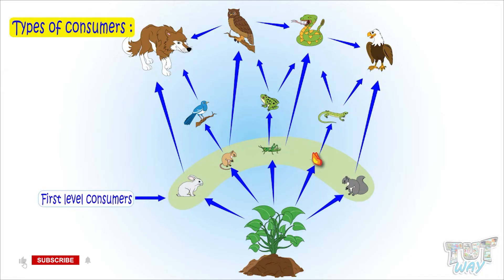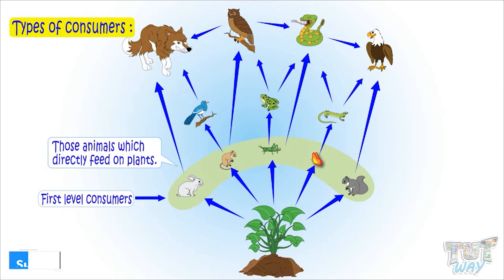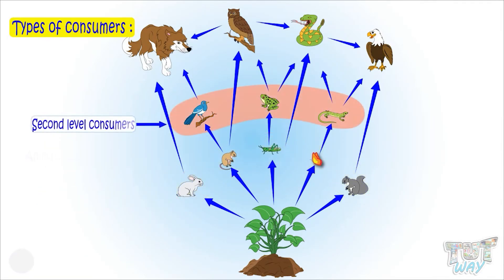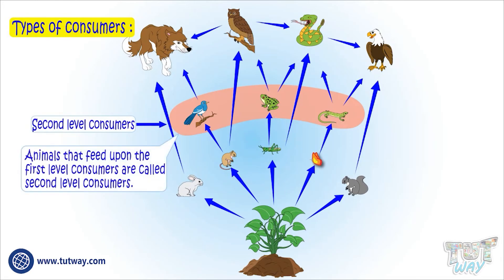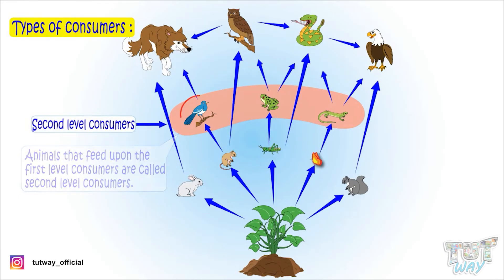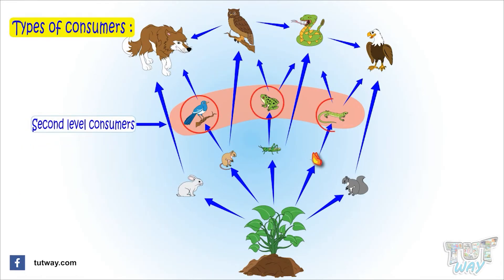First level consumers are those that directly feed on plants, for example rabbits, rats, grasshopper, butterflies, and squirrels. Second level consumers are those that feed upon the first level consumers, for example insectivorous birds, frog, and lizards. These animals eat the primary consumers like rabbits, rats, grasshoppers, and butterflies that eat plants only.